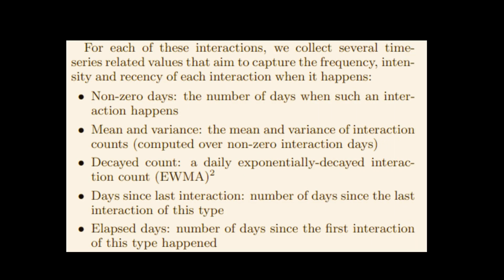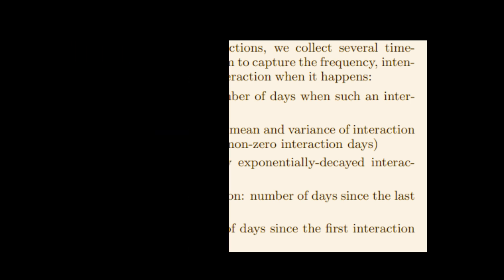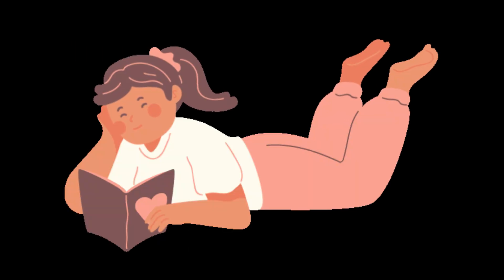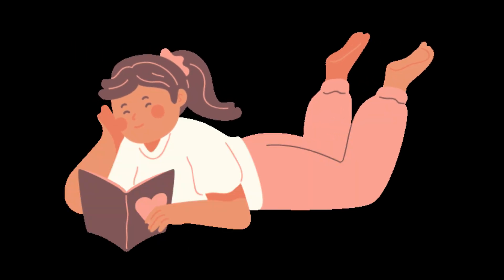For each of these interactions, they collect a lot of data. First, the number of days between when such an interaction happens, the mean and variance, and the number of days since the first interaction of this type happened. So if your interests are changing with time, they also take this into account.